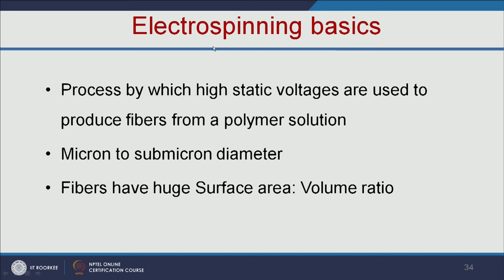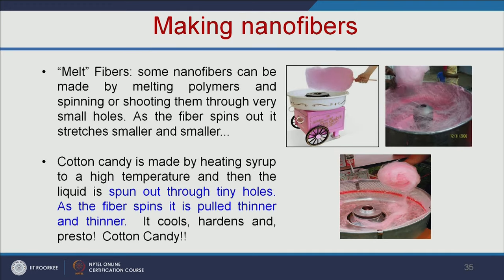The next approach is the electrospinning technique — a process by which high static voltages are used to produce fibers from a polymer solution. We can get micron to nanometer size diameter fibers, and the fibers have a huge surface area to volume ratio. How to make nanofibers using electrospinning? It is similar to making cotton candy. In cotton candy, you use sugar solution — when spun through tiny holes, the fiber is pulled thinner and thinner, giving a fibrous structure.